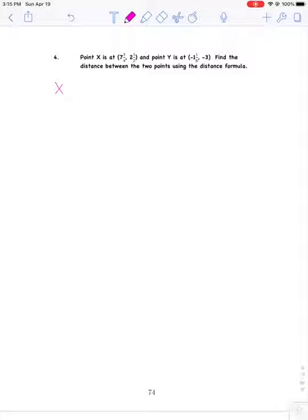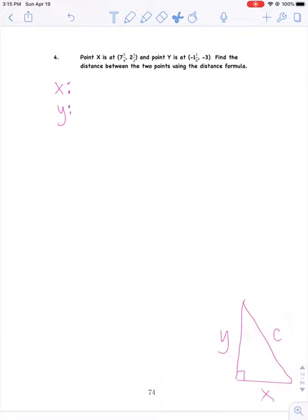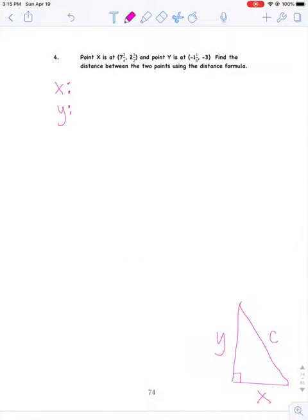So the way that I'm going to approach this is I'm going to find the distance between the x values and the distance between the y values and use those to create a right triangle. The x values would be the horizontal distance between the two points, the y values would be the vertical distance between the two points, and then side c, the hypotenuse, is the actual distance between the two points diagonally.